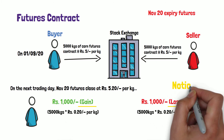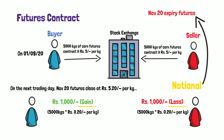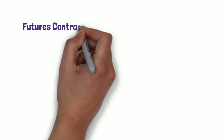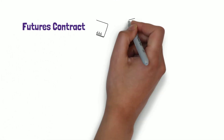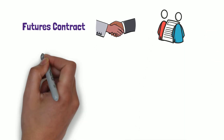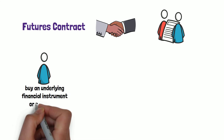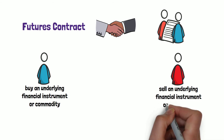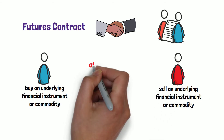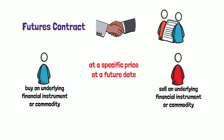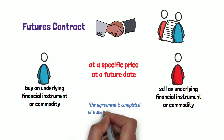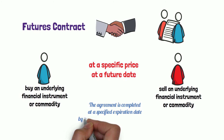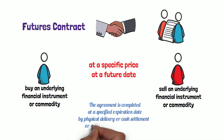This gain or loss is notional in nature until the point where the contract is settled or the futures expire. A futures contract is an agreement between two parties that commits one party to buy an underlying financial instrument or commodity and the other party to sell it at a specific price at a future date. The agreement is completed at a specified expiration date by physical delivery, cash settlement, or offset prior to the expiration date.